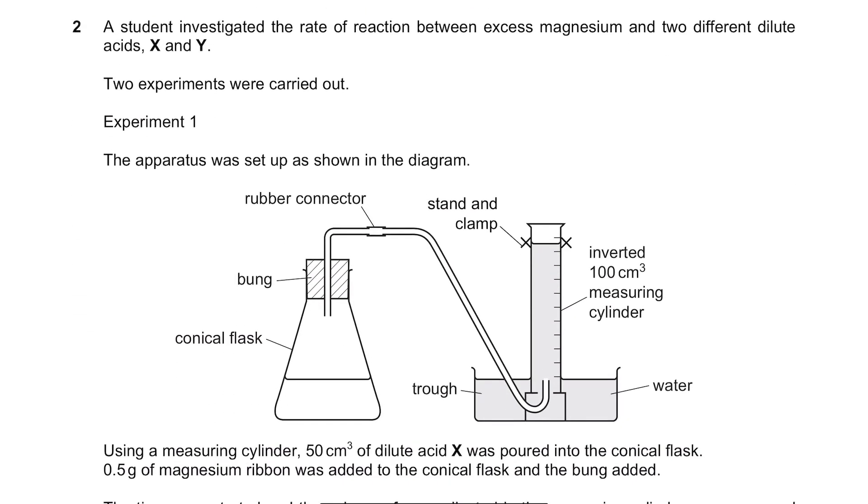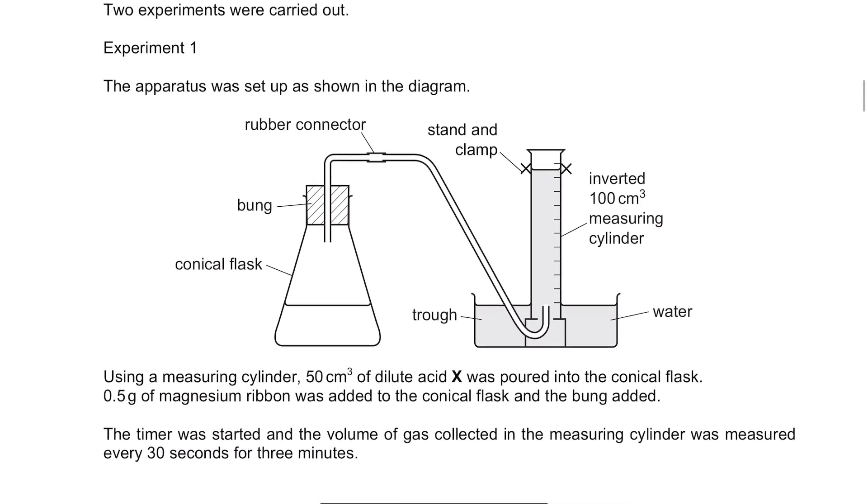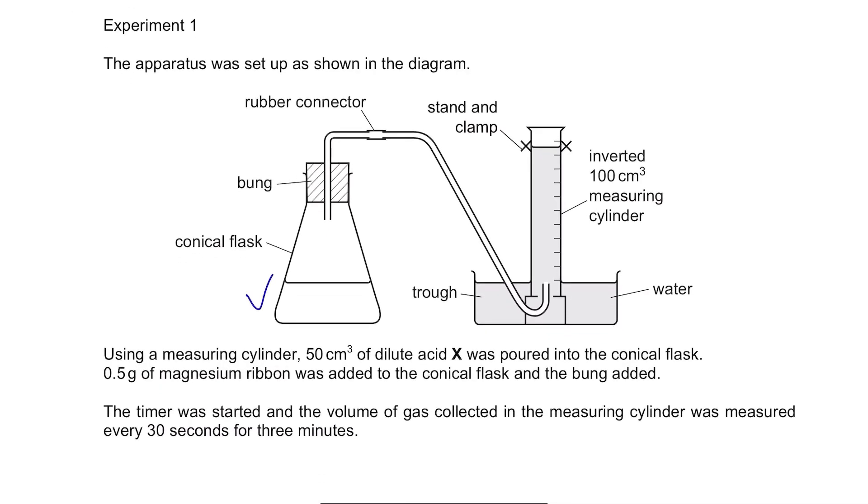Question 2. A student investigated the rate of reaction between excess magnesium and two different dilute acids, X and Y. Two experiments were carried out. Experiment 1. The apparatus was set up as shown in the diagram. We have conical flask here where reaction occurs and gas is collected here in the measuring cylinder. Using a measuring cylinder, 50 cm³ of dilute acid X was poured into the conical flask. 0.5g of magnesium ribbon was added to the conical flask and the bung added. The timer was started and the volume of gas collected in the measuring cylinder was measured every 30 seconds for 3 minutes.